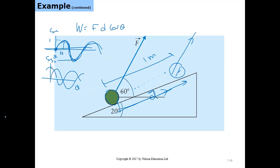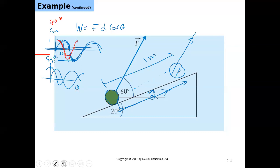Cosine θ follows a curve: at zero degrees it is one, then decreases to zero at 90 degrees, then becomes negative — reaching minus one at 180 degrees, then returning to zero at 270 degrees. Sine θ behaves differently: zero at 0°, one at 90°, back to zero at 180°, minus one at 270°. You should know this trigonometry.